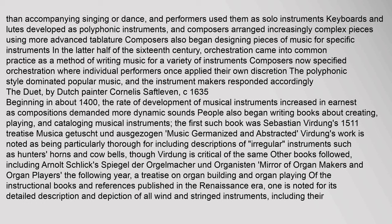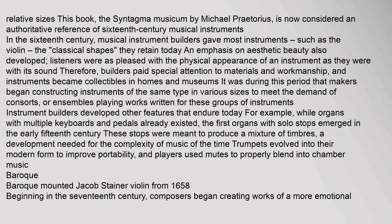The first such book was Sebastian Virdung's 1511 treatise Musica getutscht und ausgezogen. Virdung's work is noted as being particularly thorough, including descriptions of irregular instruments such as hunter's horns and cowbells. Other books followed, including Arnold Schlick's Spiegel der Orgelmacher und Organisten, a treatise on organ building and organ playing. One Renaissance book is noted for its detailed description and depiction of all wind and stringed instruments — the Syntagma Musicum by Michael Praetorius, now considered an authoritative reference of 16th-century musical instruments.